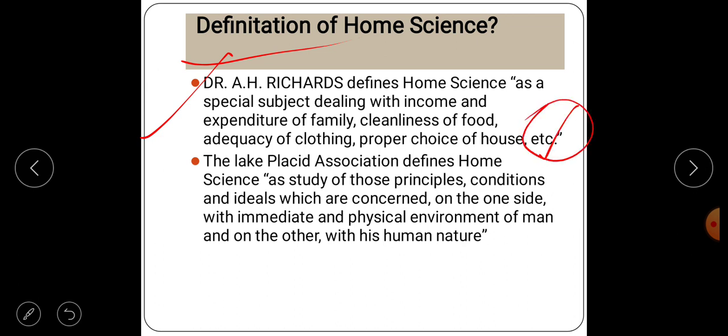As you know, Home Science has five branches. In those five branches, we are studying about food science and nutrition, textile and clothing, extension education, human development, and family resource management. These are the things which are included in the Home Science subject.